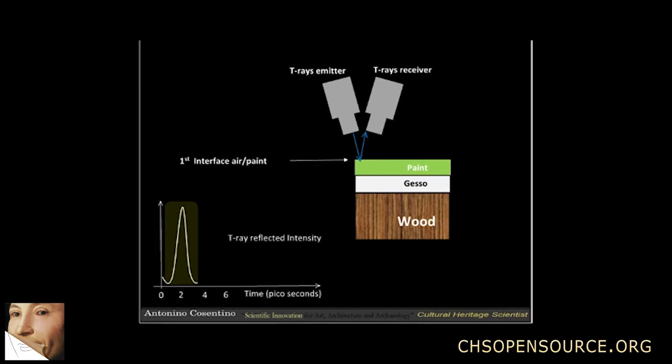The fraction of the pulse which is not reflected and not absorbed by the first layer goes through the paint layers and reaches the second interface, paint-gesso. Again, the same process takes place.